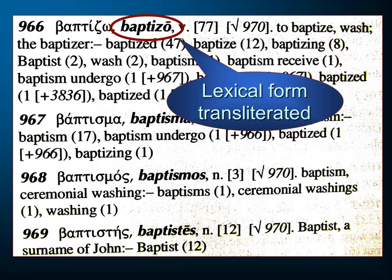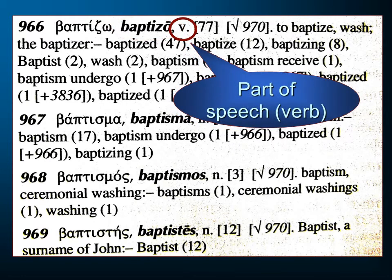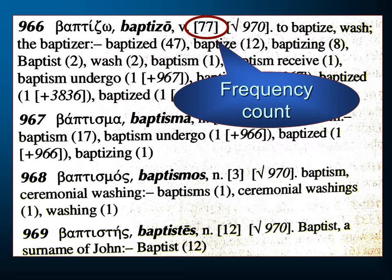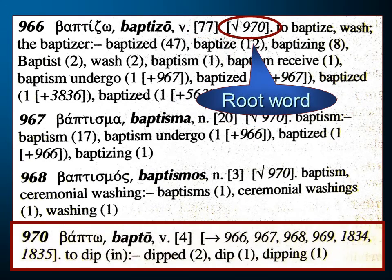Next, you have the lexical form transliterated, so if you look at the Greek letters and don't know what they mean, now you have an English rendition of that Greek word. Next, you have the part of speech — this is telling you it's V for verb; it might say noun, adjective, and so on. Then you have a frequency count — how many times that Greek word is used in the New Testament. New Testament words are Greek; Old Testament words are Hebrew. Then you have the root word. A root word can be a little dangerous, because even though that's where the word came from, it might not carry that meaning — like 'butterfly' is not really about butter or flies. The root word here points to number 970, which is bapto, meaning 'to dip.' It has that sort of basic meaning.